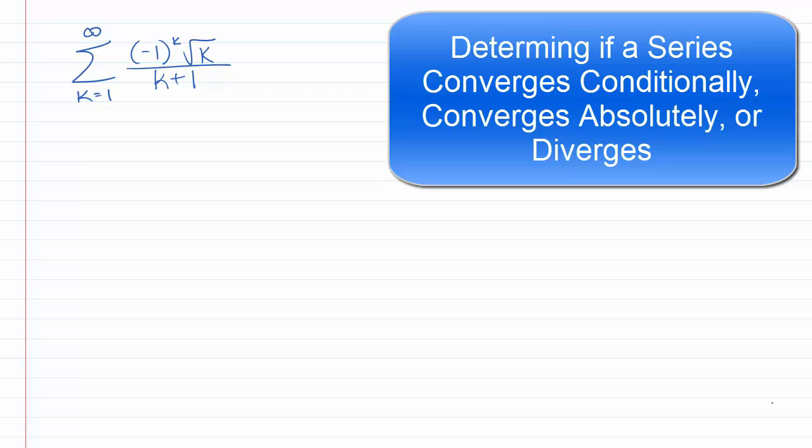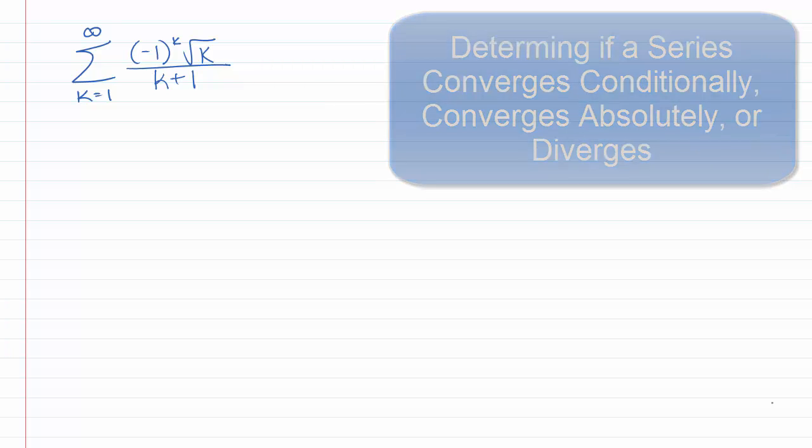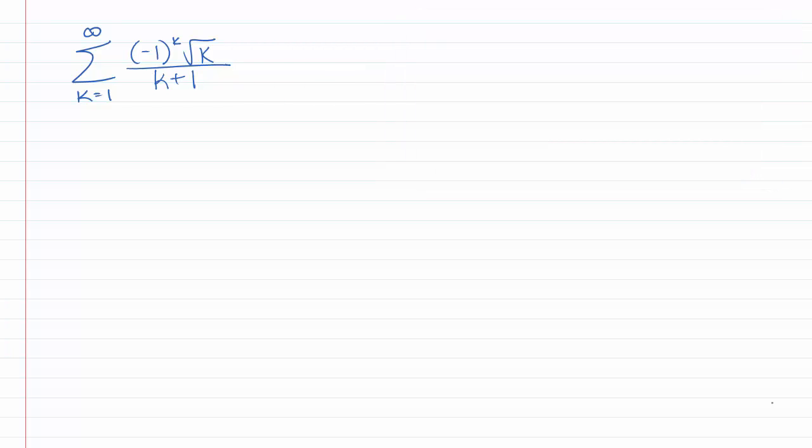Let's start with the series k equals 1 to infinity of negative 1 to the k times the square root of k, all divided by k plus 1. So this is an alternating series. We know this because we have a negative 1 to the k here. The square root of k is always positive, k plus 1 is always positive, so it's going to change signs.